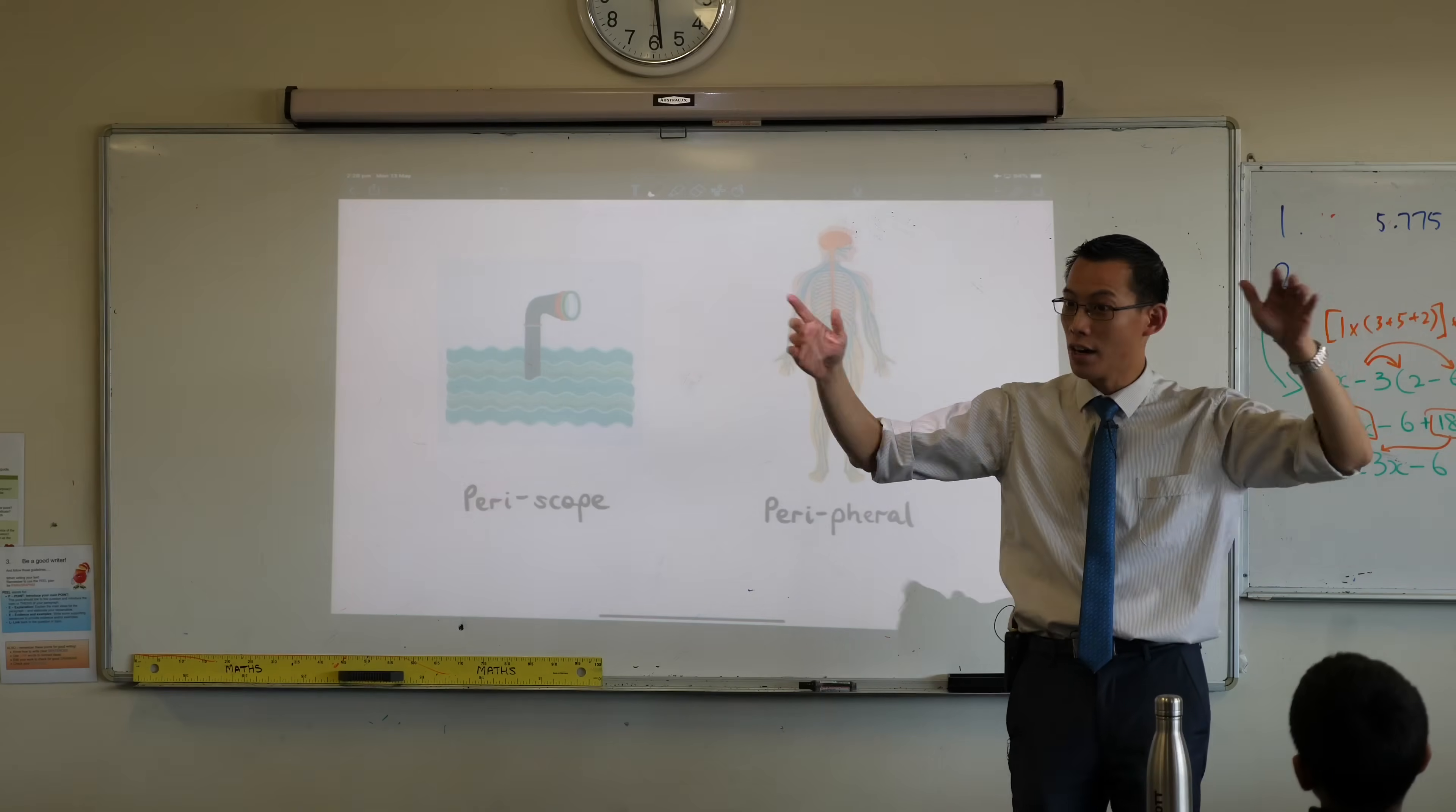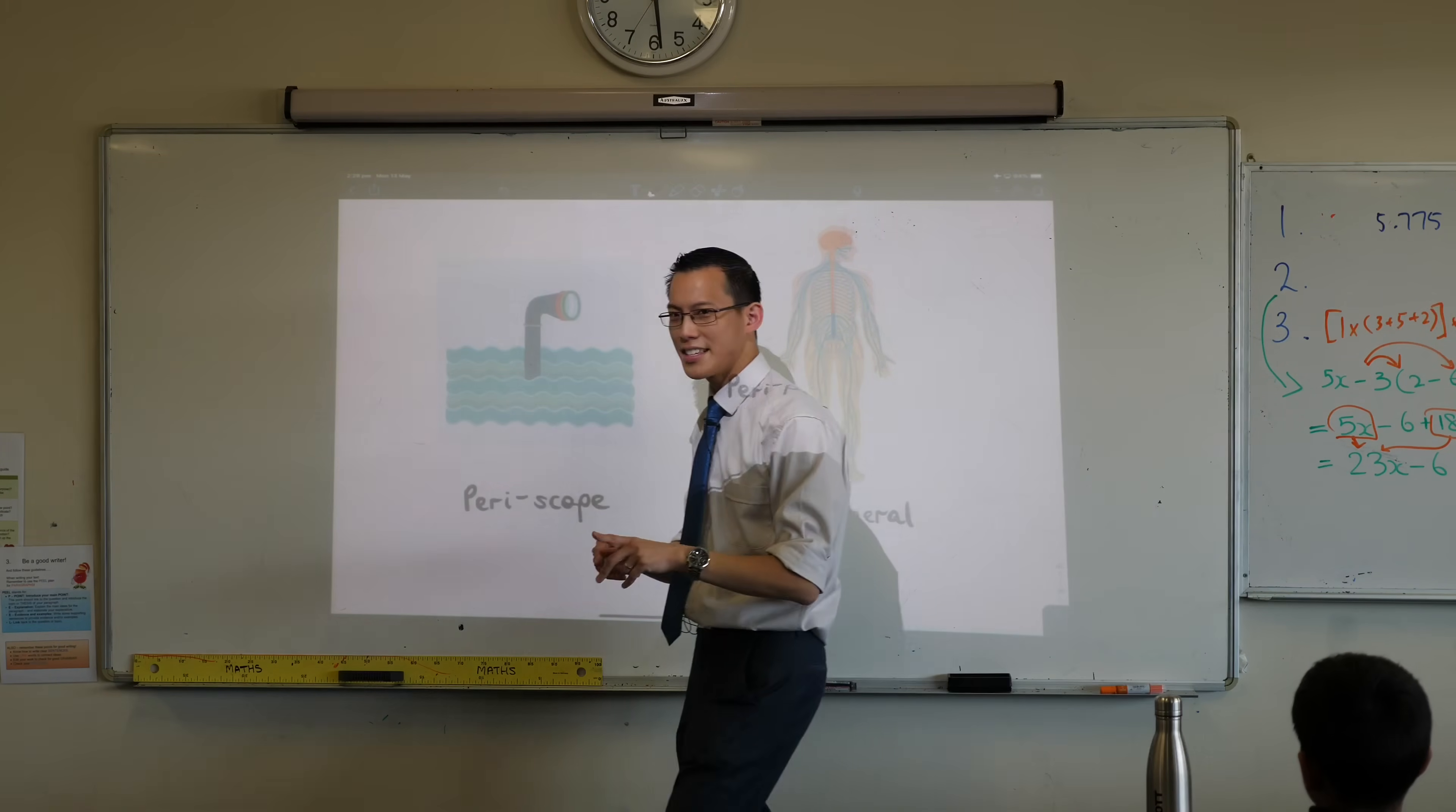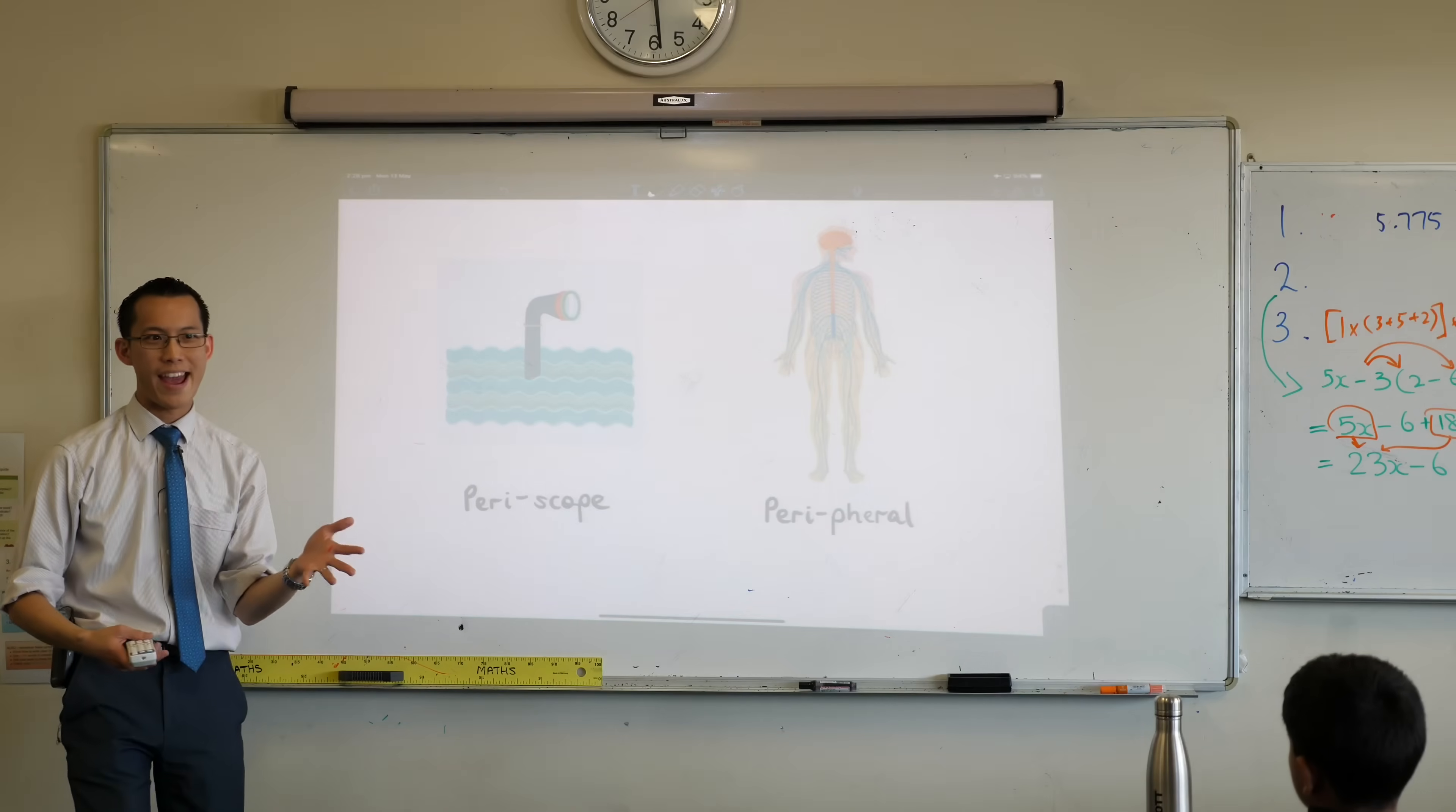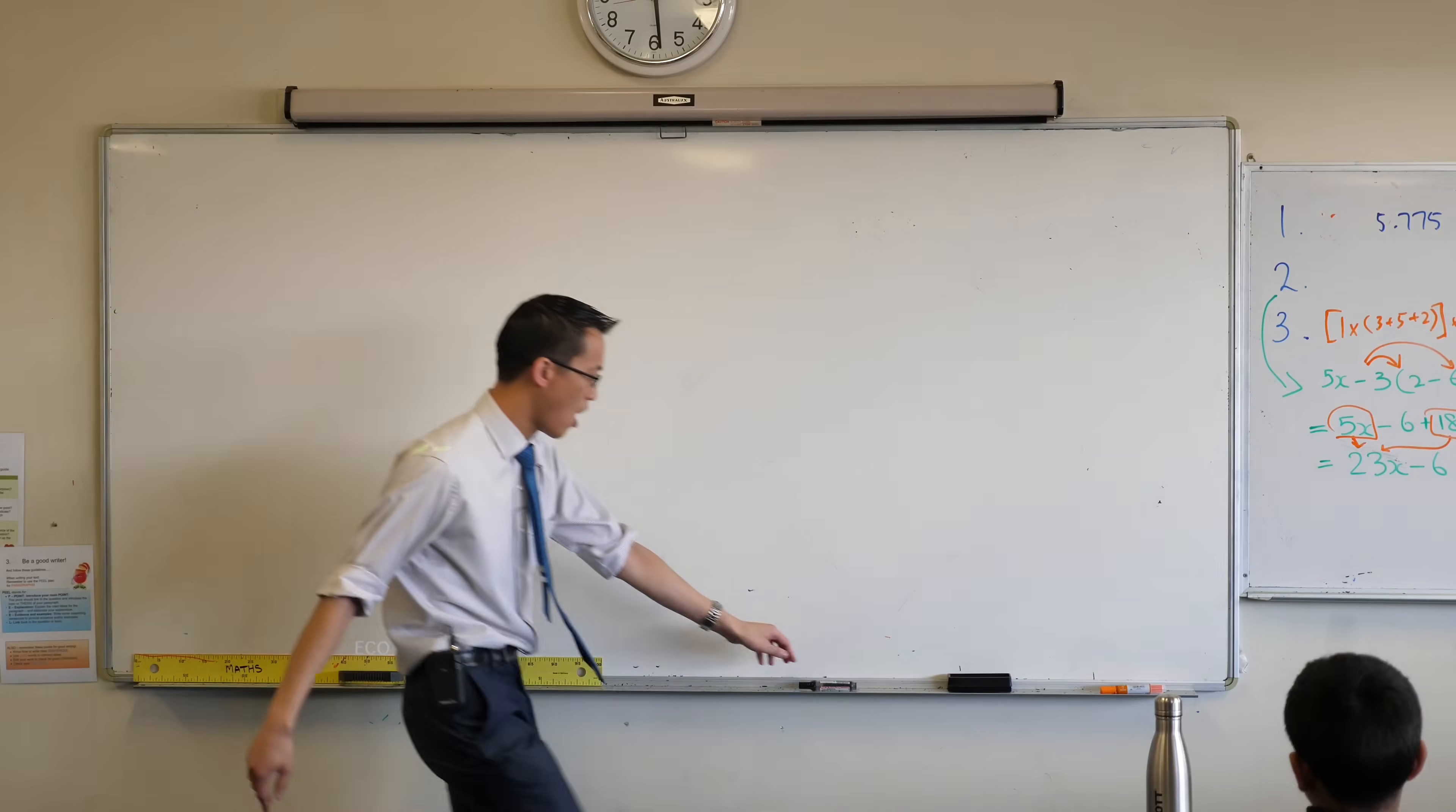My peripheral vision is awful because I wear glasses and everything outside of my glasses I can't see very well. So, I want you to think, is there a mathematical word you know that starts off the same way? Harrison. Perimeter. Thank you very much. That's the heading that I would like you all to make. Perimeter.